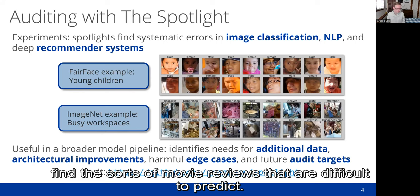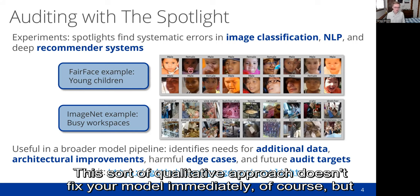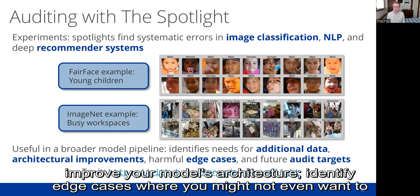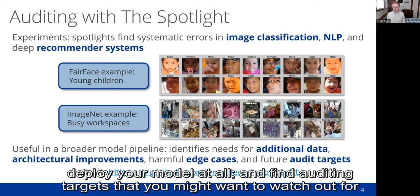This sort of qualitative approach doesn't fix your model immediately, of course, but we think that it's useful in a broader model development pipeline. It can show you ways that additional data can help in training, show you ways to improve your model's architecture, identify edge cases where you might not even want to deploy your model at all, and find auditing targets that you might want to watch out for in the future. If you're interested, check out the full paper and our open source implementation on GitHub. Thanks.